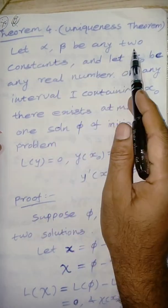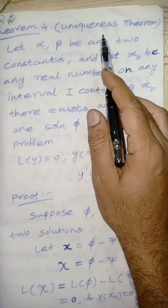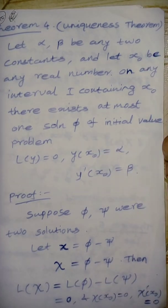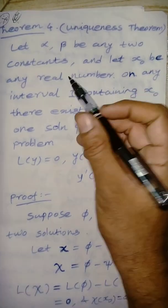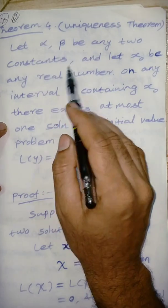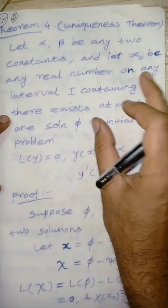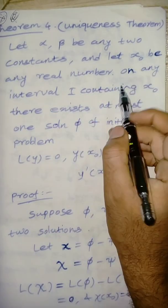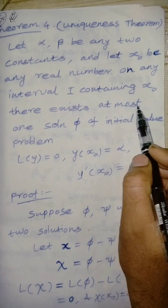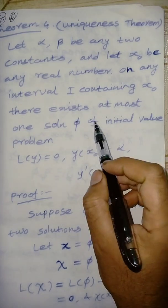Let alpha, beta be any two constants. Suppose — this is the uniqueness theorem — let alpha, beta be any two constants and x0 be any real number on an interval. There exists at most one solution.